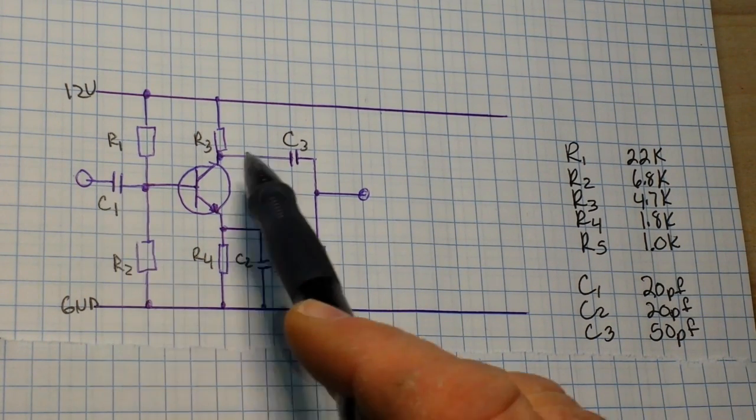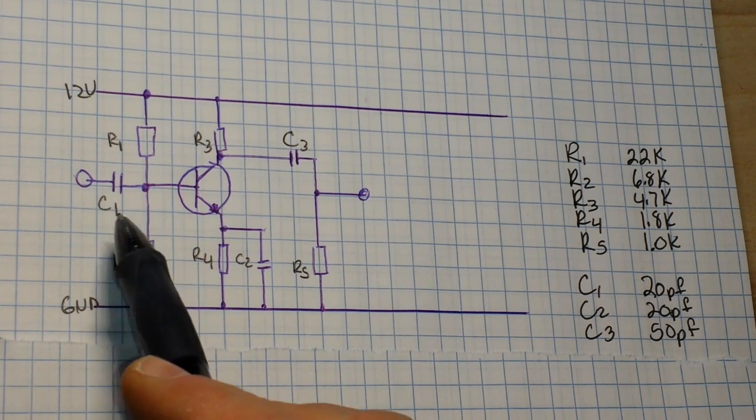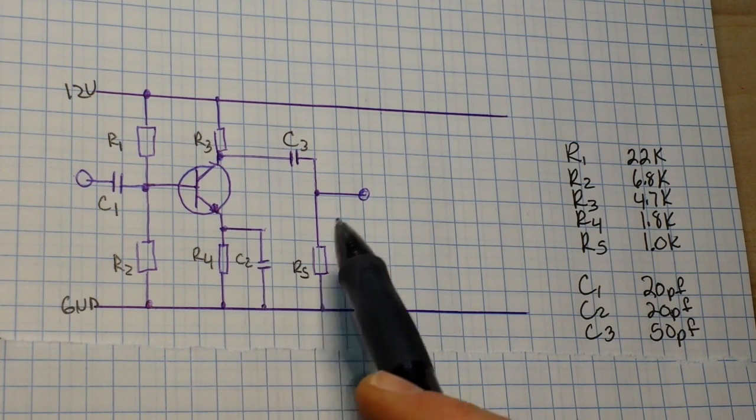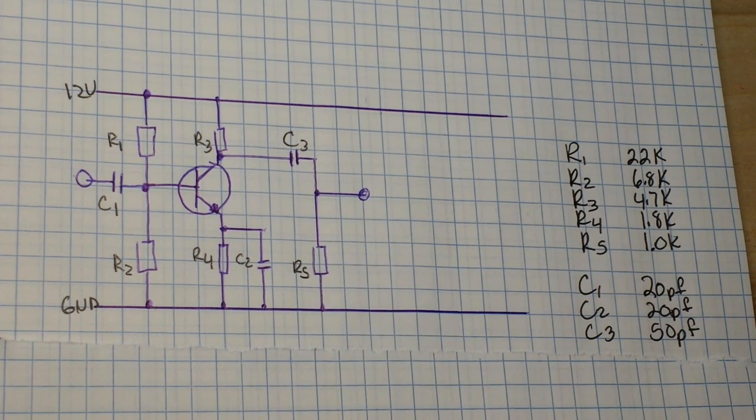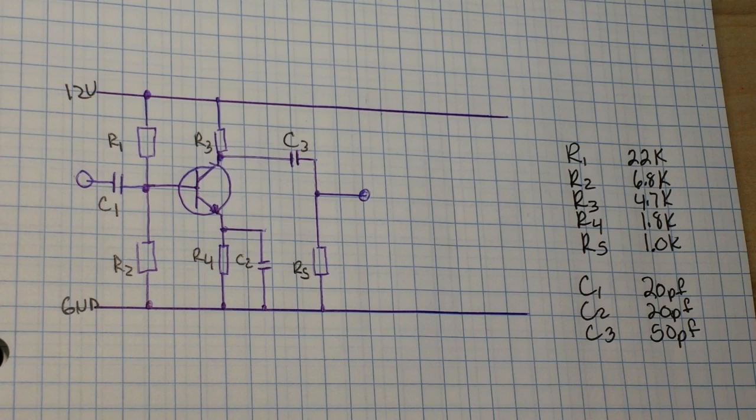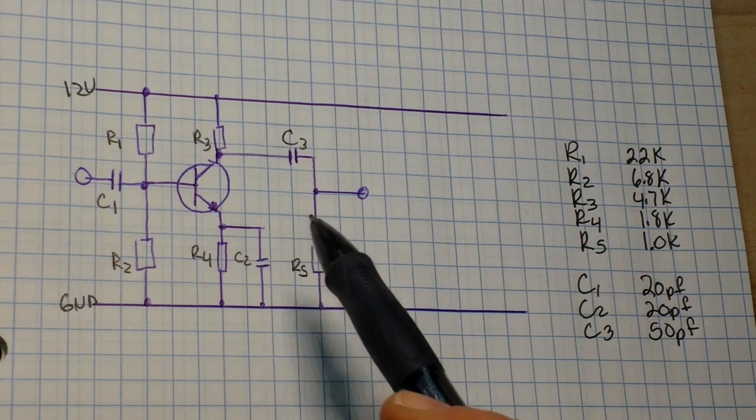Now we also have three capacitors here. What's the purpose of the capacitors? Well, if this is an audio circuit, the capacitors are going to block DC and pass the AC. C1 and C2 are both 20 microfarad and C3 is 50 microfarad. They're there to protect any attached components.